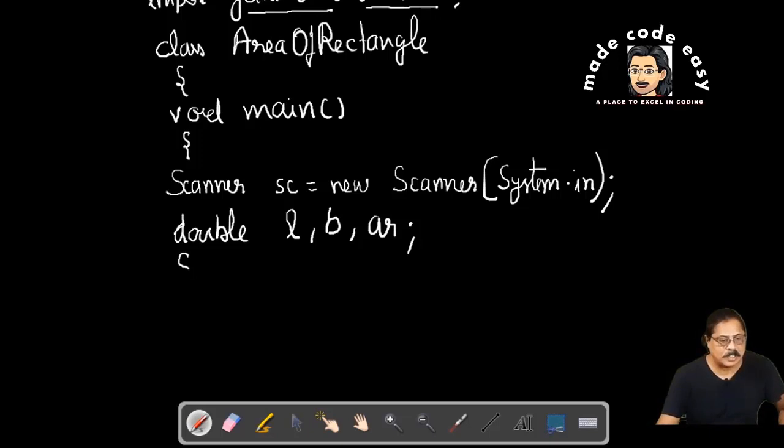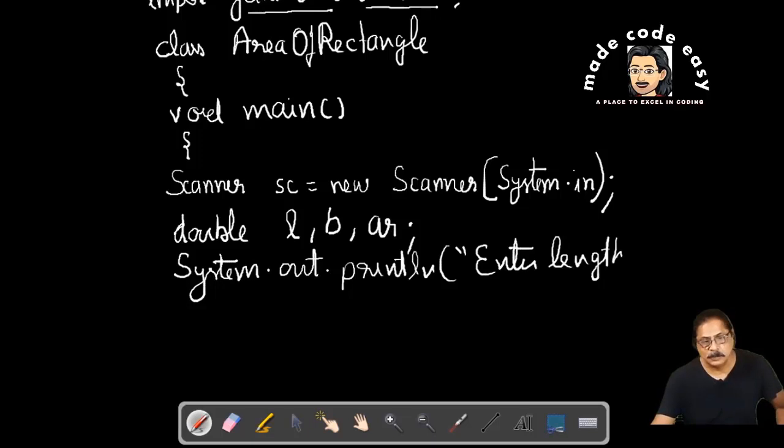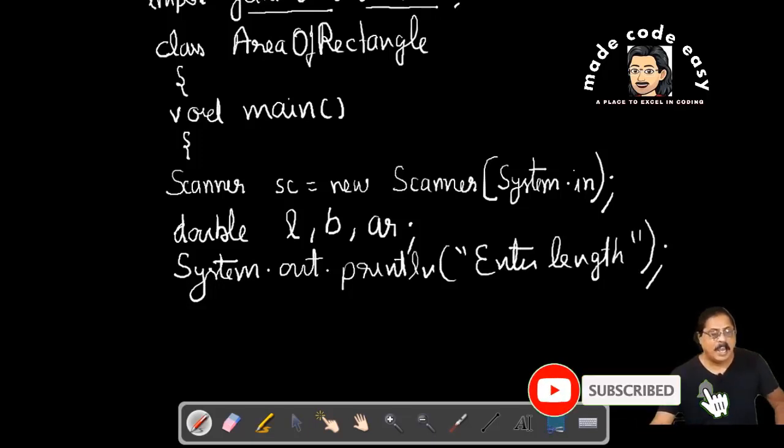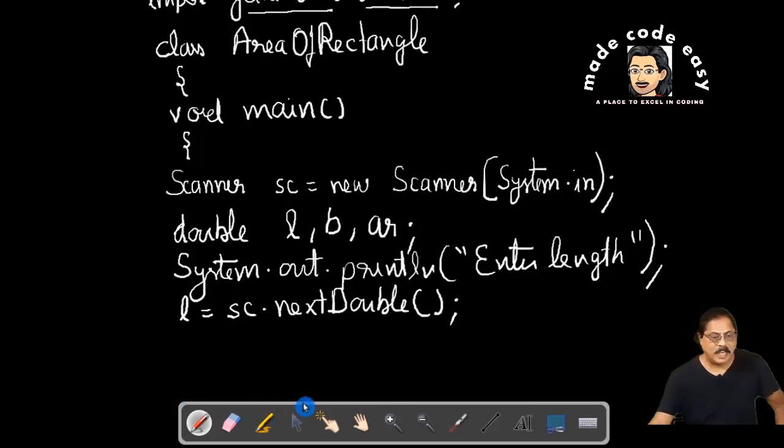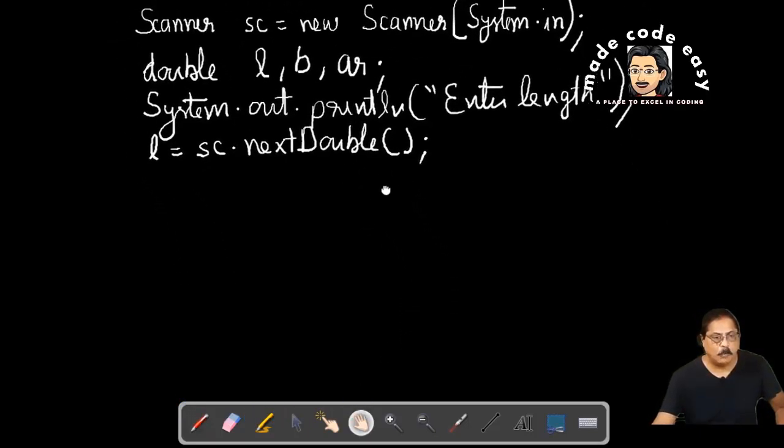Then we write System.out.println enter length. This is meaningful message. And I write l equals sc.nextDouble(), so length we have input. Now what we will do?